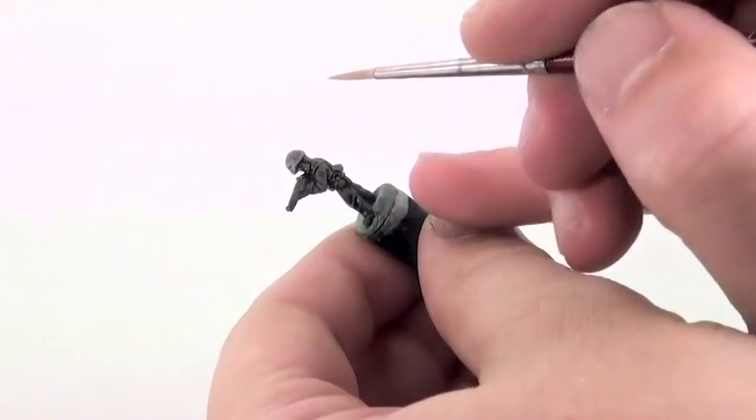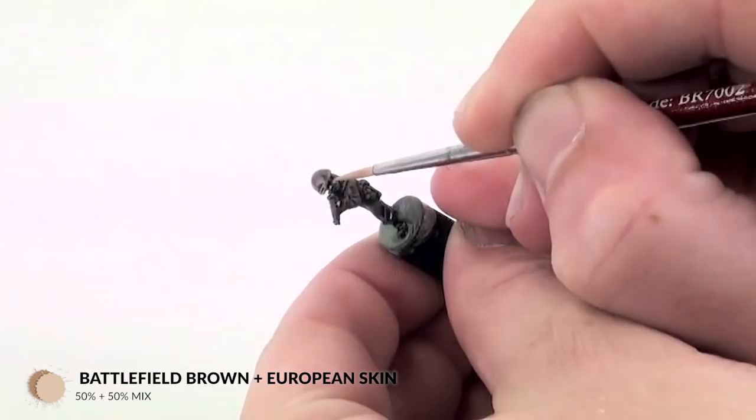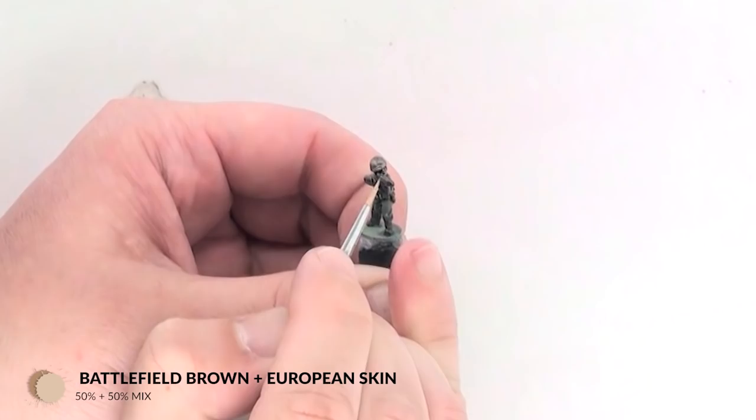So the first thing that I like to do when I start highlighting is to highlight the flesh. The reason for this is because the colors are generally quite light, and if they spread a little bit onto the uniform, it's okay. You'll end up painting over it. When I highlight flesh, I like to go through two stages.